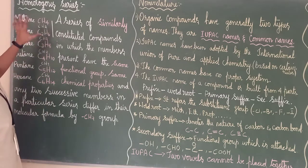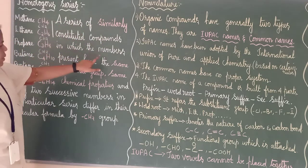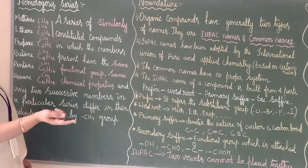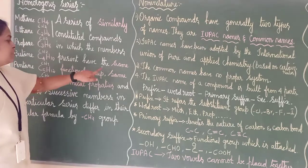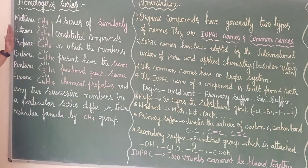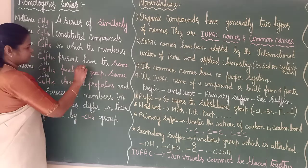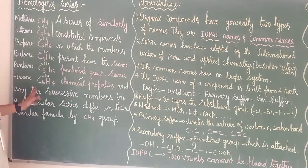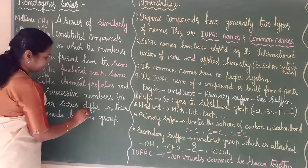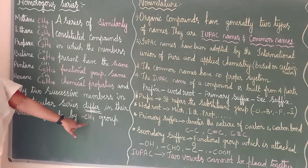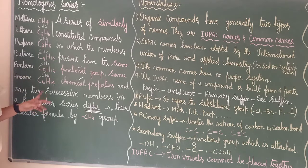Now the definition for homologous series: it is a series of similarly constituted compounds in which the members present have the same functional group and same chemical properties. Any two successive members in a particular series differ in the molecular formula by CH2 group.